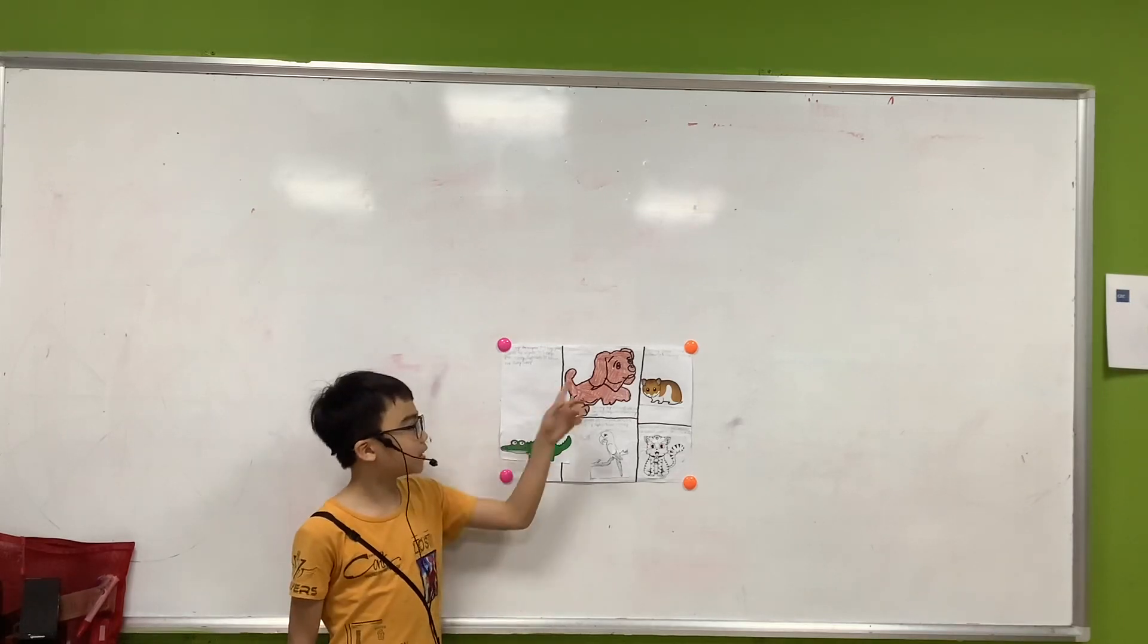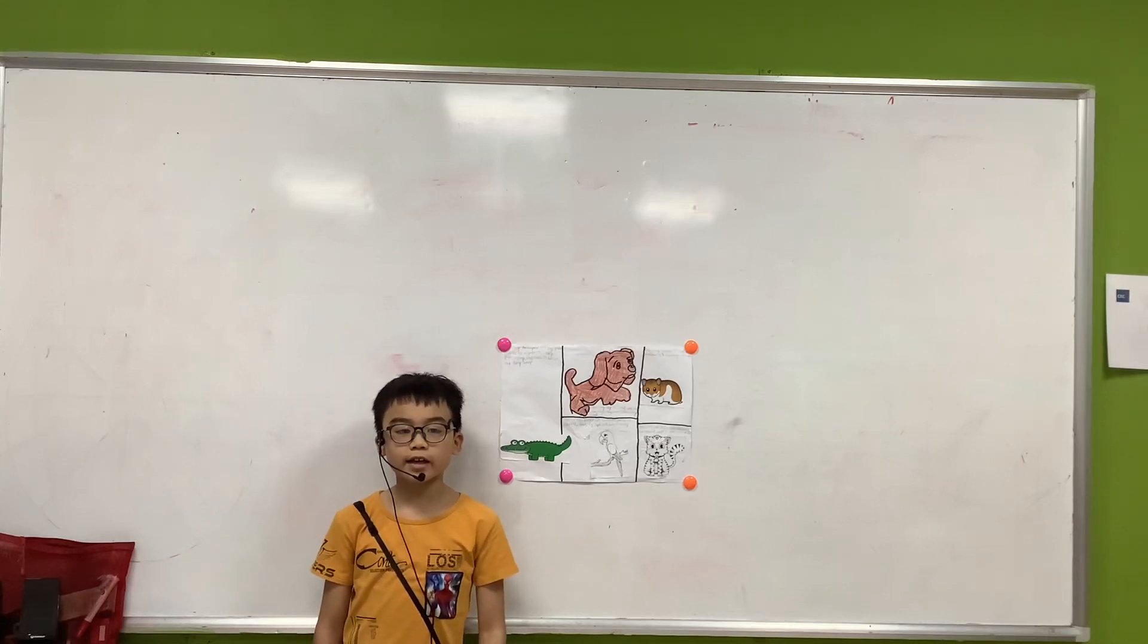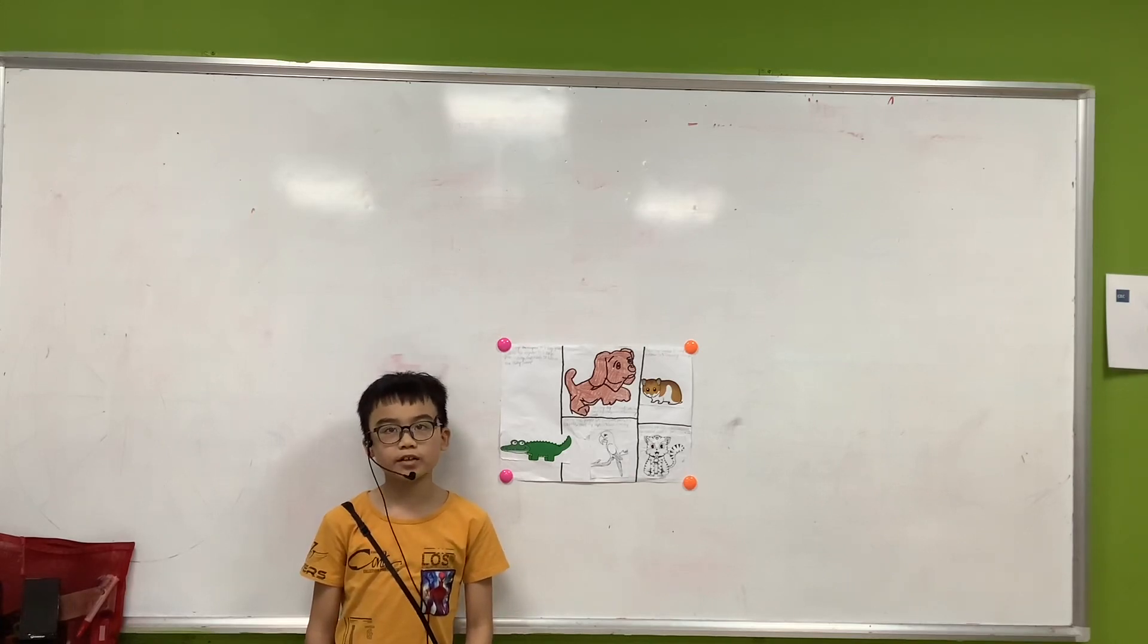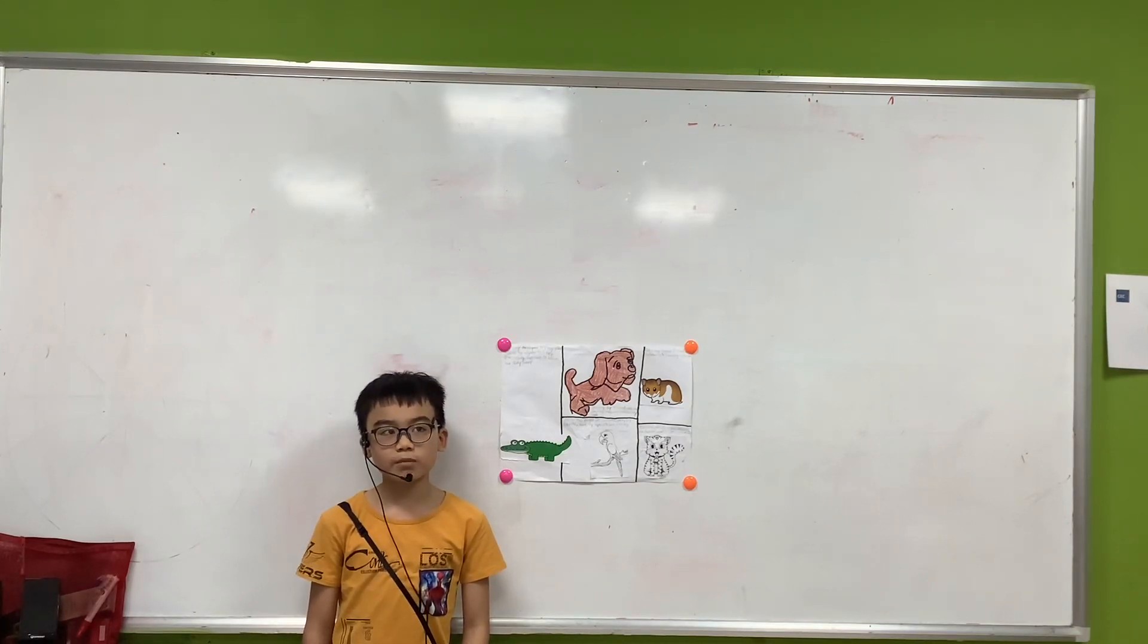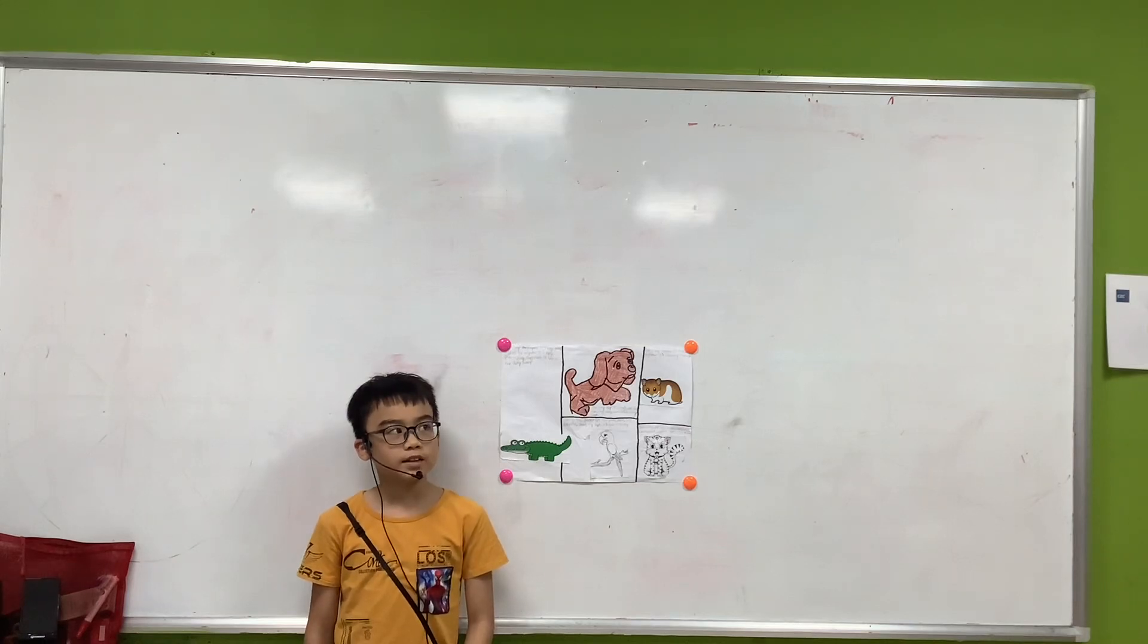The first animal is my dog. It has four legs and brown eyes. They can come in all different shapes, and it lives in a cage.